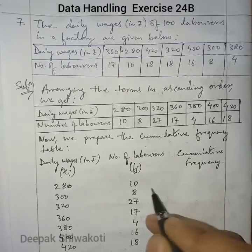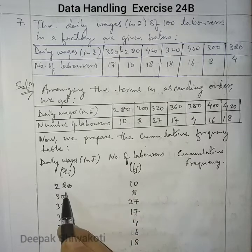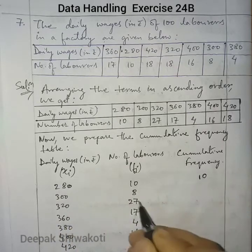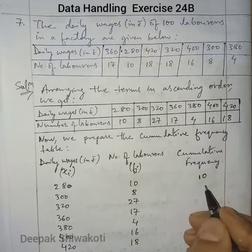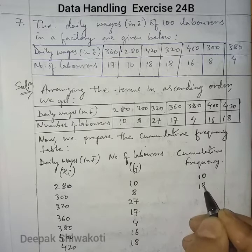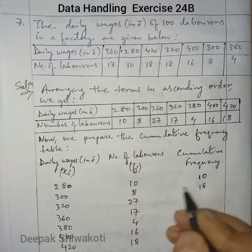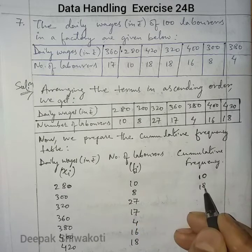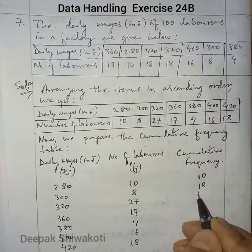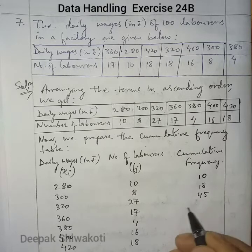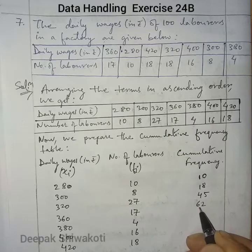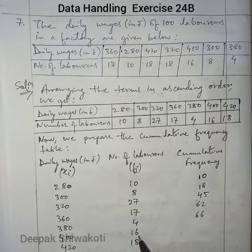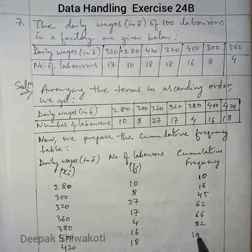Now we find the cumulative frequency. The cumulative frequency of 280 is 10. Adding 8, we get 18. 18 plus 27 gives 45. 45 plus 17 gives 62. 62 plus 4 gives 66. 66 plus 16 gives 82. And 82 plus 18 gives 100.